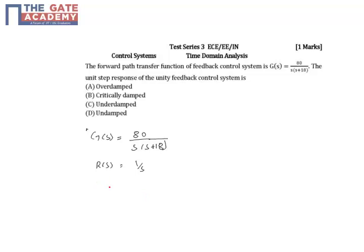First, whatever be the method, we have to determine the closed loop transfer function. T(s) is equal to G(s) by 1 plus G(s) into H(s). Since it is a unity feedback system, H(s) is equal to 1.